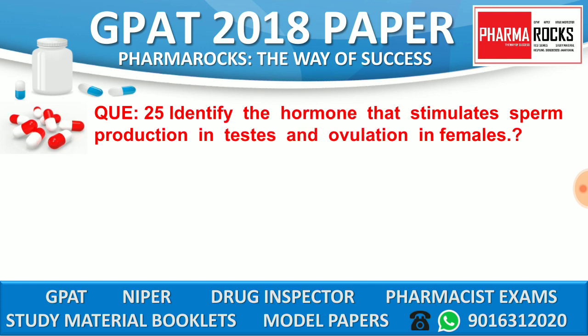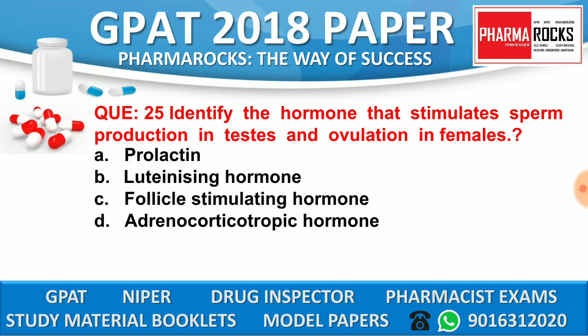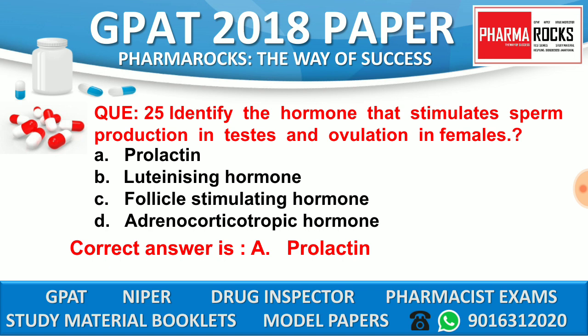Question number 25: Identify the hormone that stimulates sperm production in testes and ovulation in the female. Option A: Prolactin. Option B: Luteinizing hormone. Option C: Follicle stimulating hormone. Option D: Adrenocorticotropic hormone. The correct answer is option A, Prolactin. Prolactin is the hormone that stimulates sperm production in the testes and ovulation in the female.